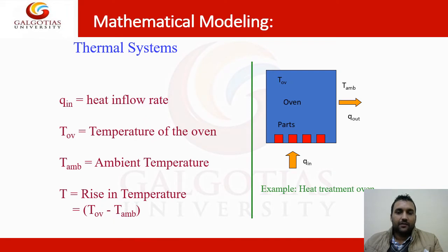In the Mathematical Modeling, we will discuss using this thermal system example. Suppose, this is the heat treatment in the Oven. This is the example we have taken. This is Oven. This is the parts or product which we want to heat. The T_ov is the temperature of Oven. T_ambient is the temperature of ambient air. The rise in the temperature is equal to T_ov minus T_ambient temperature for thermal system. This is a mathematical modeling simple example for this thermal system.